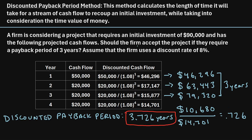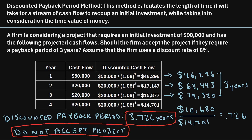The firm said they only accept a project if the payback period is within three years. We can see that it will take longer than three years to recoup the initial $90,000, so we would say: do not accept the project, because the payback period is not within three years. That was a quick example of how to calculate a discounted payback period.